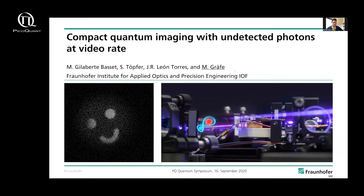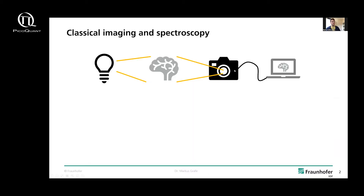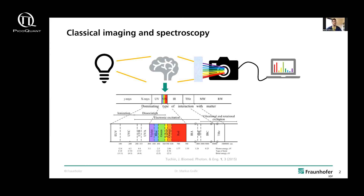Let's start with some classical imaging and spectroscopy at the beginning, because everybody's familiar with this. If you have some tissue — like a brain sketched here — and you want to do some microscopy or imaging, you illuminate it with a light source, put a camera behind, and image what light goes through. The same is true for spectroscopy: you add a dispersive element and then you can do spectroscopy. The issue is that most of those applications, because of the given detector technology, are limited to the visible range.